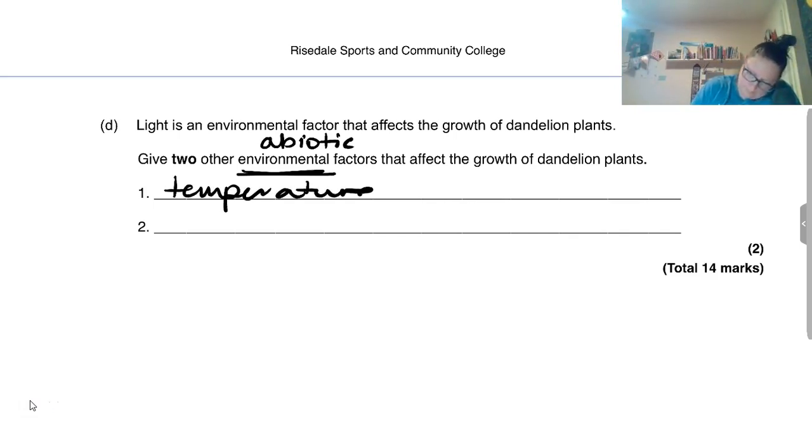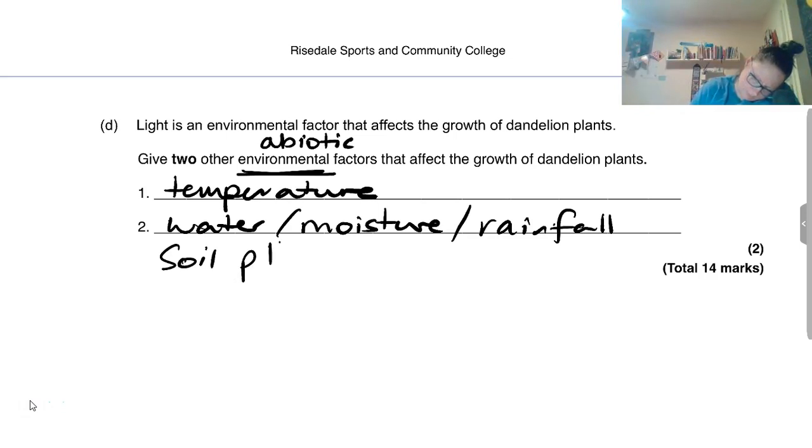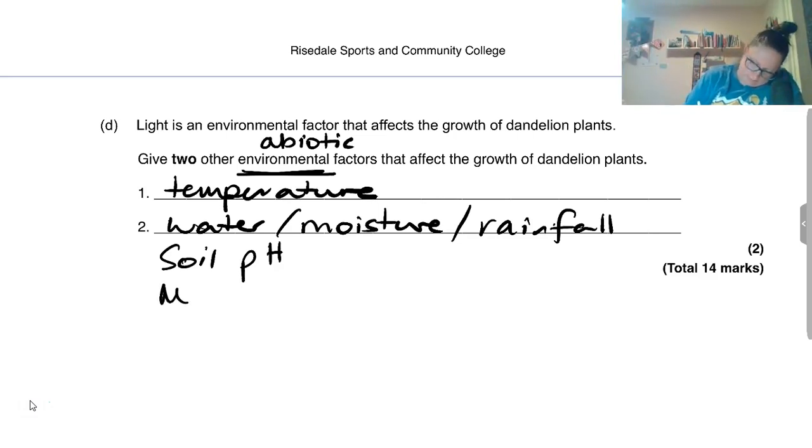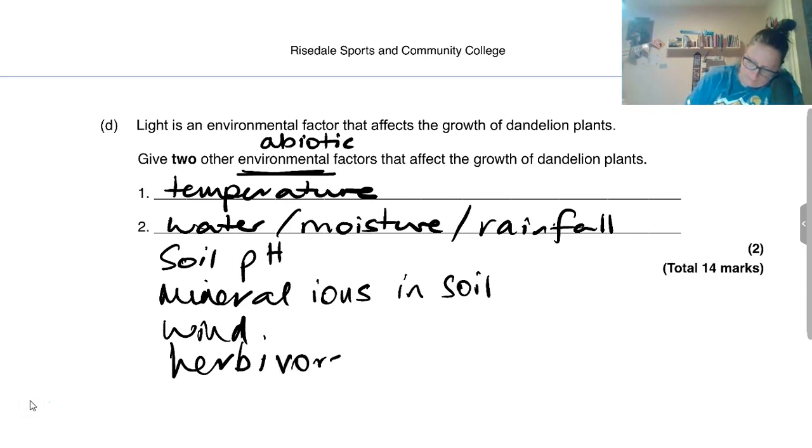We learned a whole list of these things. It could be temperature, it could be water availability or moisture, or any sort of other word linked with that like rainfall in the area. We could talk about soil pH. If it's too acidic or too alkaline, then they're not going to be too keen on it. And the amount of mineral ions in the soil, wind, number of herbivores in the area. If the field is covered in rabbits, they could be eating them, they could be trampling on them. So these are the kind of factors that we would consider.